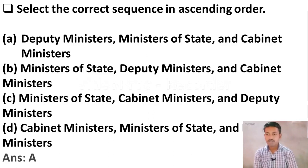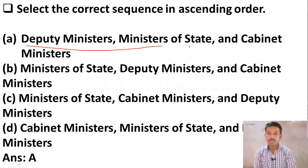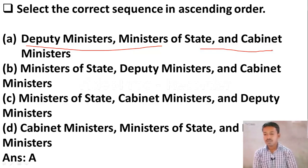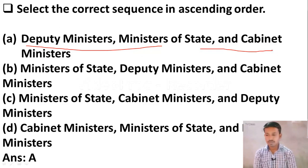The correct sequence is Option A — first comes Deputy Ministers, then Ministers of State, then at the end Cabinet Ministers. Please remember this ascending order: Deputy Ministers, Ministers of State, and Cabinet Ministers. Option A is the correct sequence.